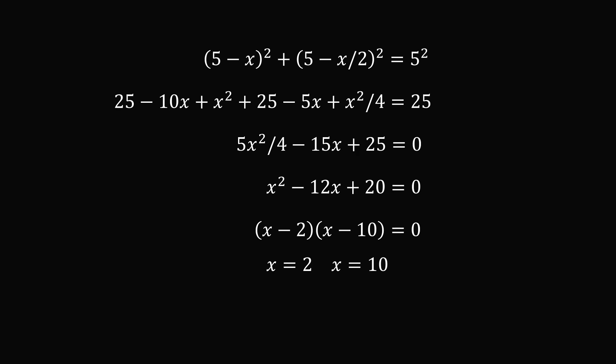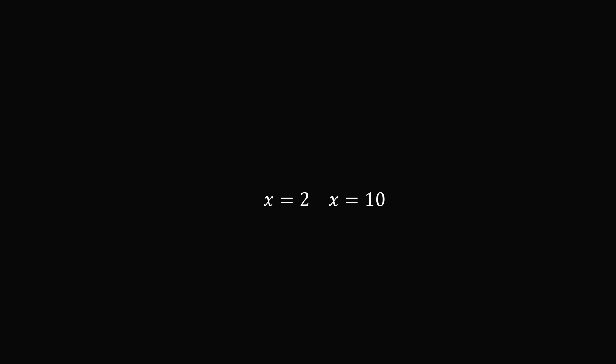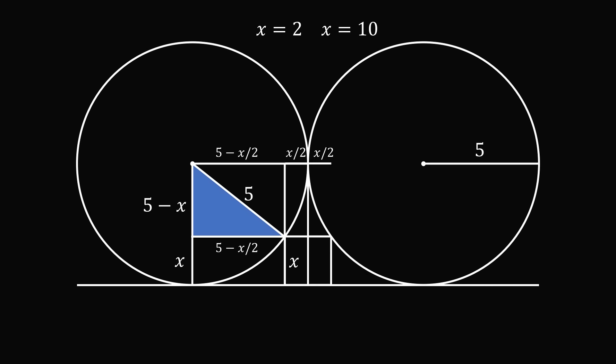This gives two solutions that x is equal to 2 and x is equal to 10. So now let's interpret these two values. Let's go back to our original diagram. Now notice the radius was equal to 5, and the way we set it up is that x would be a portion of that. So we know that x has to be less than or equal to 5, so we can eliminate the solution that x is equal to 10.